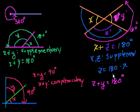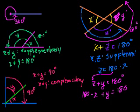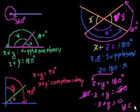But we just figured out that z is 180 minus x, right? So let's just substitute that back in here. So we get 180 minus x plus y is equal to 180 degrees. Why don't we subtract 180 degrees from both sides of this equation? That cancels out. And we get minus x plus y is equal to 0. And then add x to both sides of this equation. And we get y is equal to x.